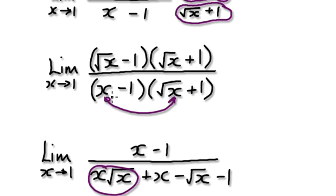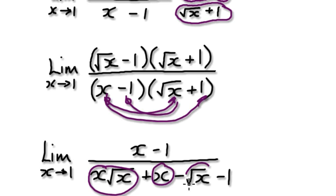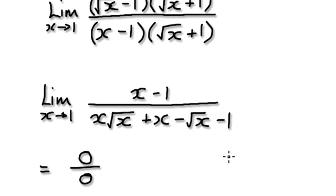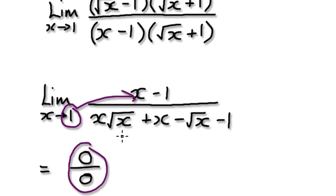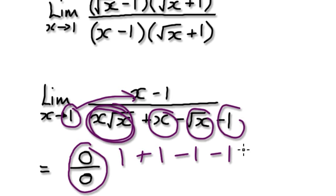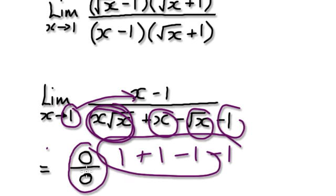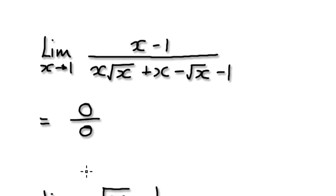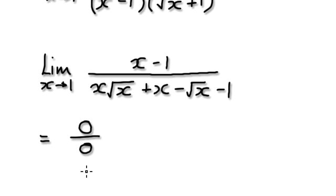On the bottom, this times this gives you this, then this times this gives you x, this times this gives you minus root x, and this times this gives you minus 1. Then as x approaches 1, this part here would be 1, this here will be plus 1, this here will be minus 1, and this here will be minus 1 — giving you 0 over 0. That was the mistake.